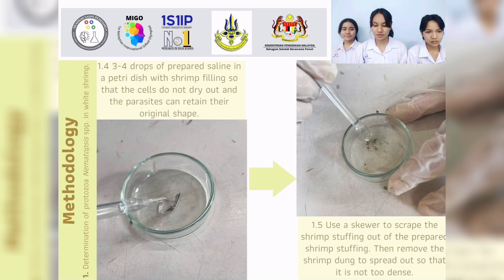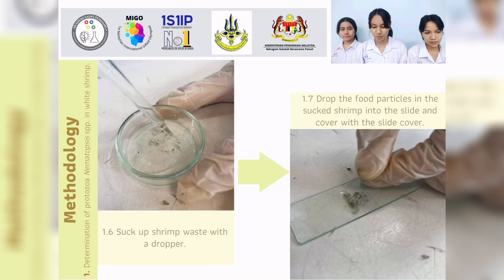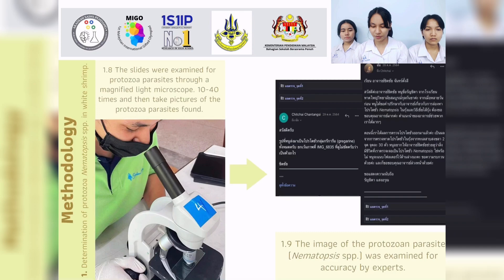Five, use a skewer to scrape the shim, pulling the stuffing out of the prepared shim. Then remove the shim down to spread it out so that it is not too dense. Six, suck up the shim with a dropper. Seven, drop the full particle and the collected shim into a slide and cover with the slide cover. Eight, examine the slide under a microscope for protozoa parasites at magnification 10X to 48X and take a picture of the protozoa parasite.